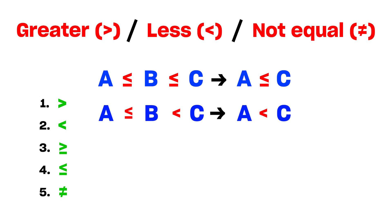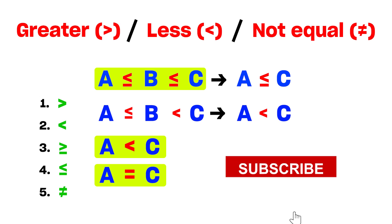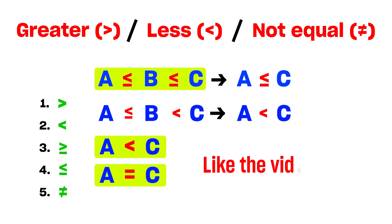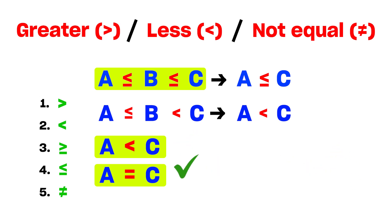Now, in the first case again — A less than or equal to B, B less than or equal to C. If you are given the conclusion like A less than C and A equal to C, since the relation is less than or equal throughout, your answer is: either one or two follows — either A less than C, or A equal to C.